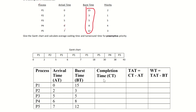Now we will see the completion time of each process. The completion time of each process is the right-hand side value from the Gantt chart.